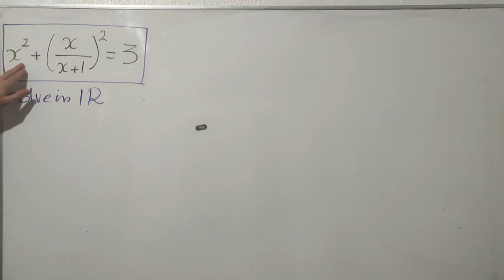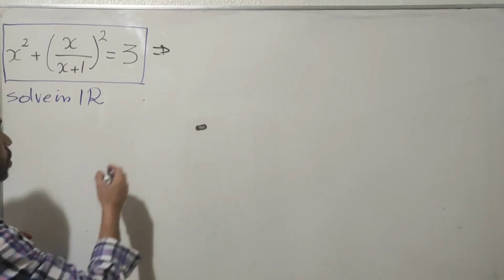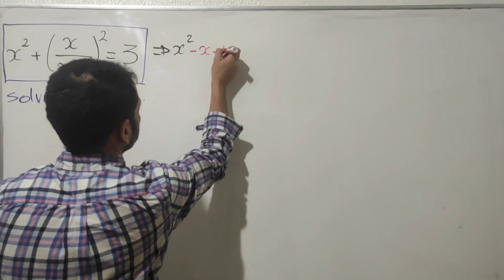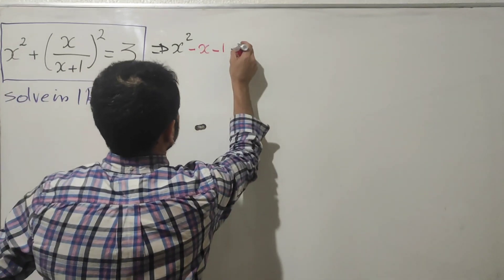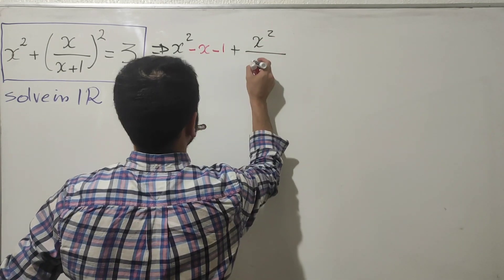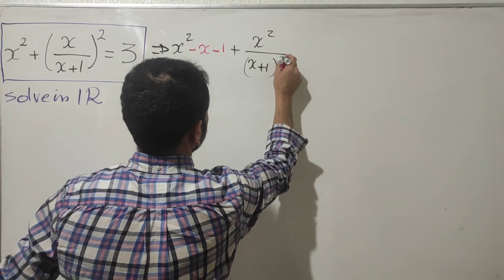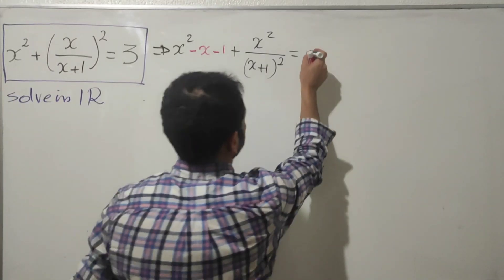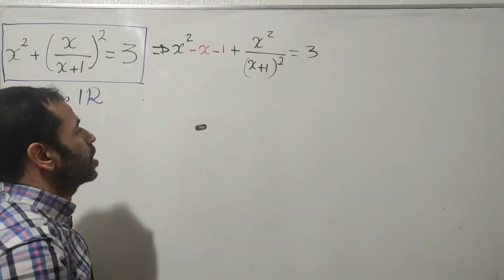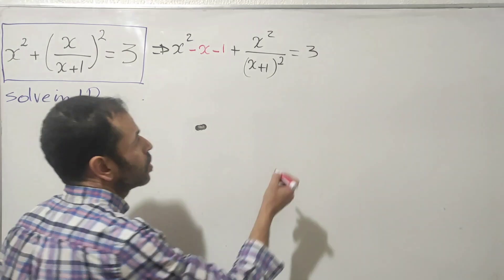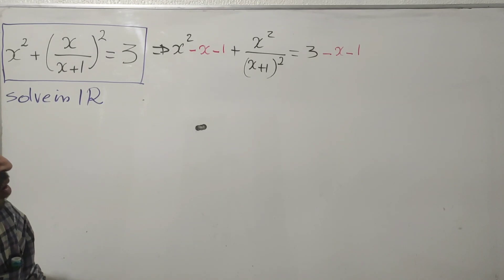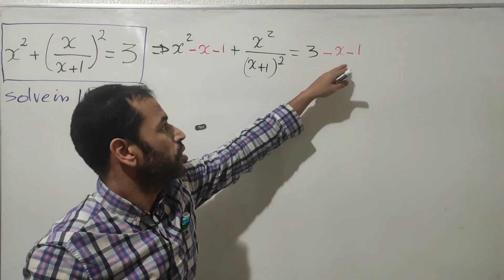I'm going to add minus x minus one on both sides. So we get x squared minus x minus one, plus the term x over x plus one, all raised to the power two. On the other side of the equation I add the same thing — minus x minus one — which is just adding zero on both sides. Simplifying three with minus one gives us two minus x.